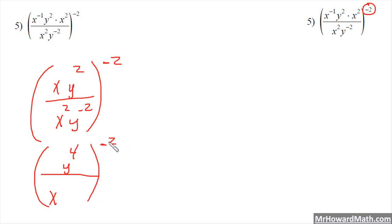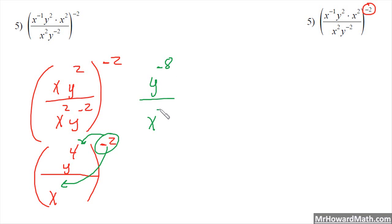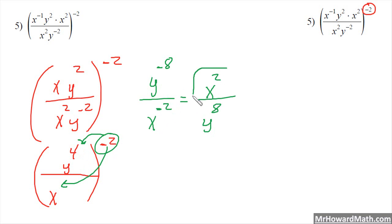So I bring the negative 2 exponent in here and here, giving me y to the negative 8 power over x to the negative 2 power — multiplying outside to inside. The y to the negative 8 goes to the denominator with a positive exponent, and x to the negative 2 comes up to the numerator with a positive exponent. So the final answer is x squared over y to the 8th.